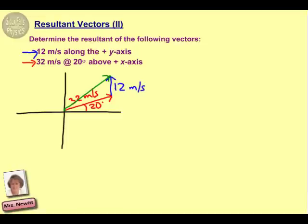Now we need to start doing some calculations to see exactly what its value is going to be. Notice that our first vector, the 12 meters per second, is pretty simple to work with. It's in the straight vertical direction, so it doesn't have any horizontal component at all. It just has a vertical component in the upwards direction of 12 meters per second.